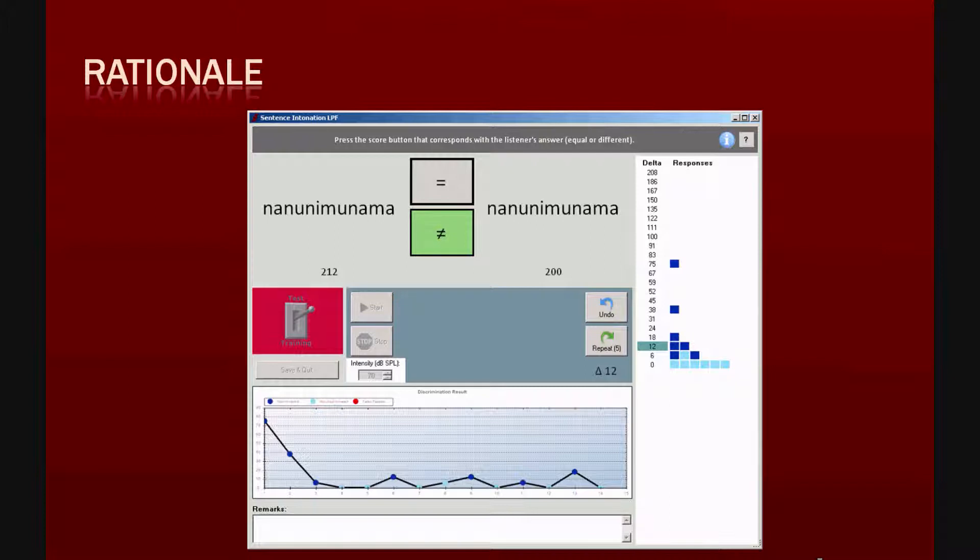It converges to the smallest delta F0 that is still perceived by the listener. This is the just noticeable difference or JND. As said, two sounds are presented, one of which is the pseudo-sentence of 200 hertz, the other the same pseudo-sentence with a rise of delta F0 in the final syllable.